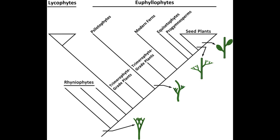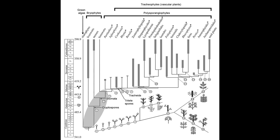However, unlike modern vascular plants, the Rheniophytes did not possess leaves nor true roots. Instead, they had rhizoids, much like the bryophytes. Furthermore, the stems of Rheniophytes quickly terminate into sporangia, which is also similar to bryophytes, while stems of modern vascular plants are indeterminate, allowing them to grow indefinitely.